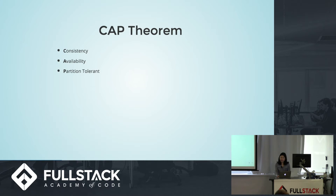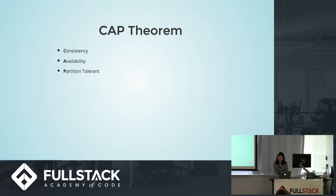The CAP theorem applies to both relational and non-relational databases. C stands for consistency, which ensures that all nodes see the same data at the same time. Availability ensures that every request gets a response of either success or failure. And P is partition tolerance, which ensures continued functionality even if an instance of a database fails.